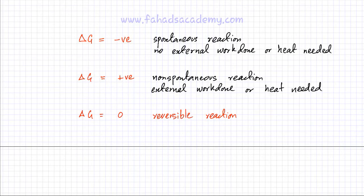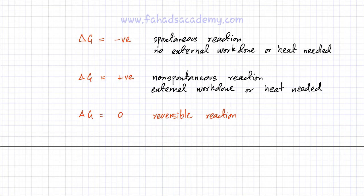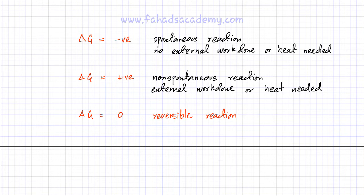Based on Gibbs free energy, we can establish three rules. First, if delta G is negative, the reaction is spontaneous — no external work or heat is needed; instead there's an output of heat or work. Second, if delta G is positive, the reaction is non-spontaneous because some external work or heat would be required. Third, if delta G equals zero, it's a reversible reaction. Always remember: a negative delta G means the reaction is spontaneous and would most likely occur on its own.